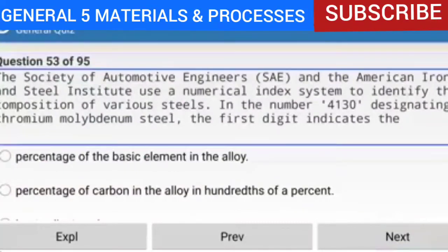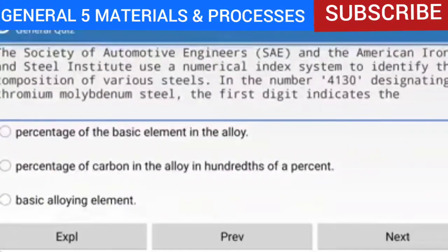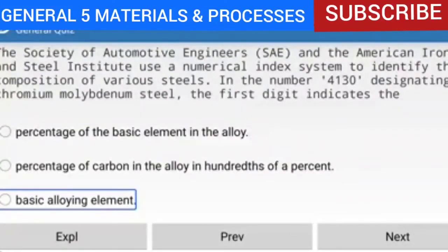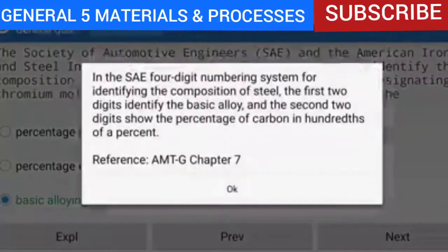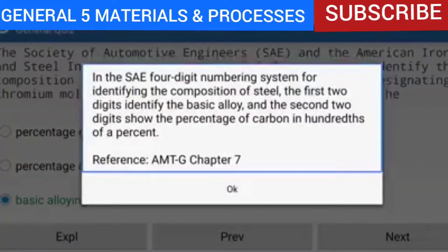Question 53 of 95: The SAE and the American Iron and Steel Institute use a numerical index system to identify the composition of various steels. In the number 4130, designating chromium-molybdenum steel, the first digit indicates the basic alloying element. In the SAE 4-digit numbering system, the first two digits identify the basic alloy, and the second two digits show the percentage of carbon in hundredths of a percent.